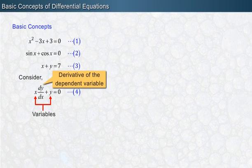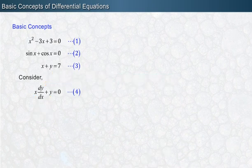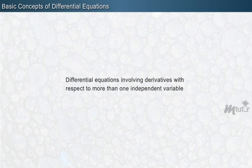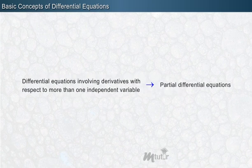Such an equation is called a differential equation. A differential equation involving derivatives of the dependent variable with respect to only one independent variable is called an ordinary differential equation. Whereas differential equations involving derivatives with respect to more than one independent variable are called partial differential equations.